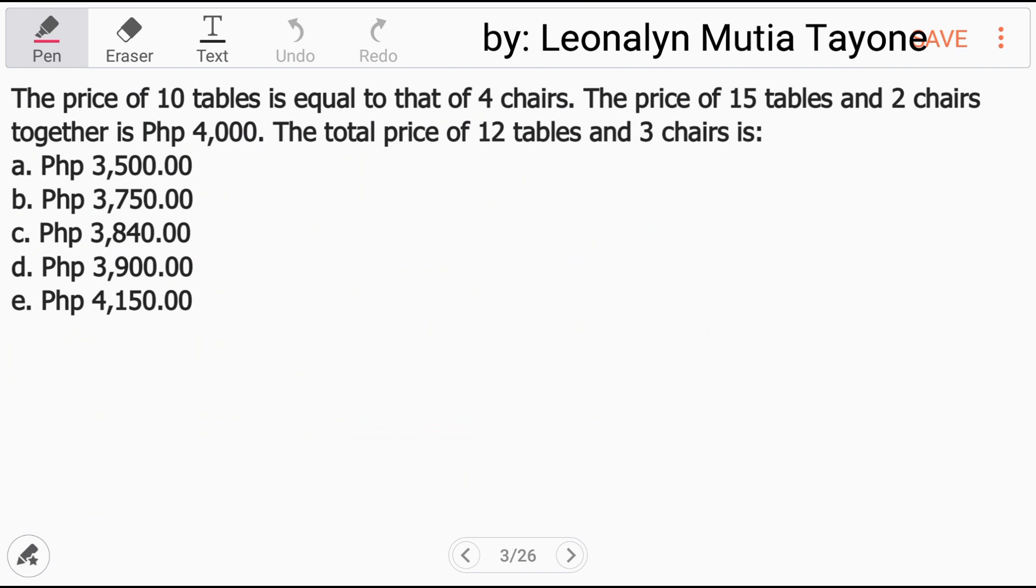Now basahin ulit natin yung problem. The price of 10 tables ay equal sa 4 chairs. The price of 15 tables and 2 chairs together ay 4,000. The total price, ito yung tanong kung ano yung total price sa 12 tables and 3 chairs. Let's do solution number 1. Itong solution number 1 natin ay kunwari lang na hindi natin alam kung paano ito isolve. So tawagin natin itong kanto-style way of solving.